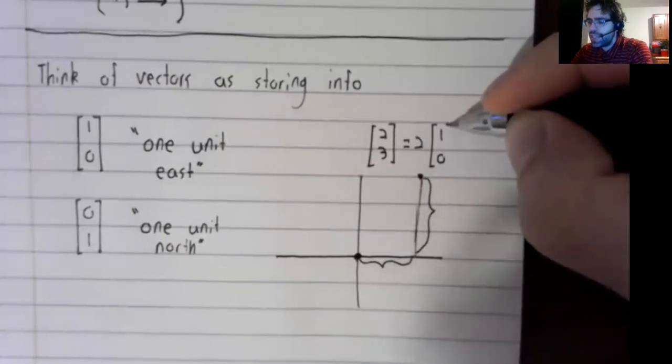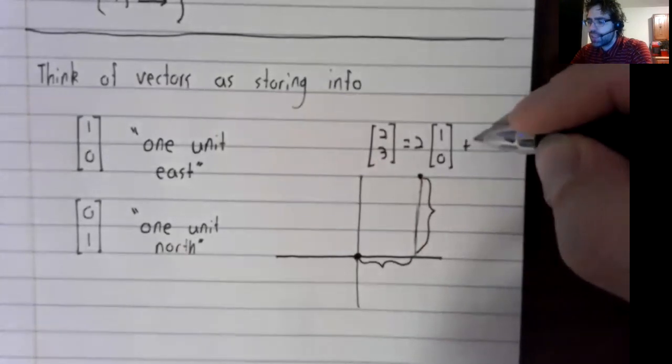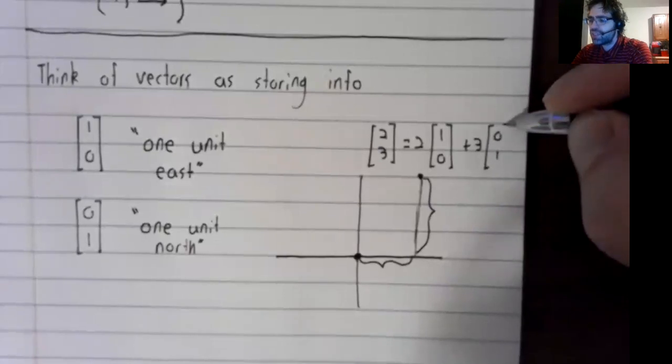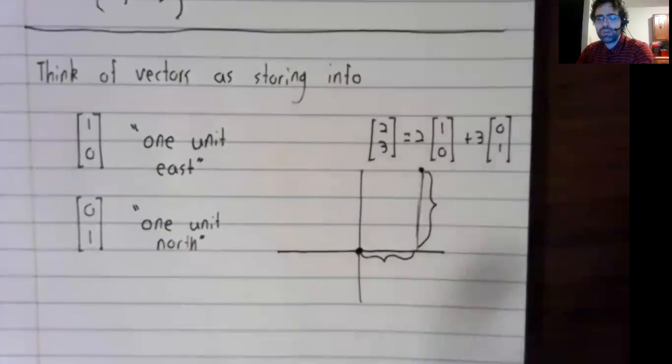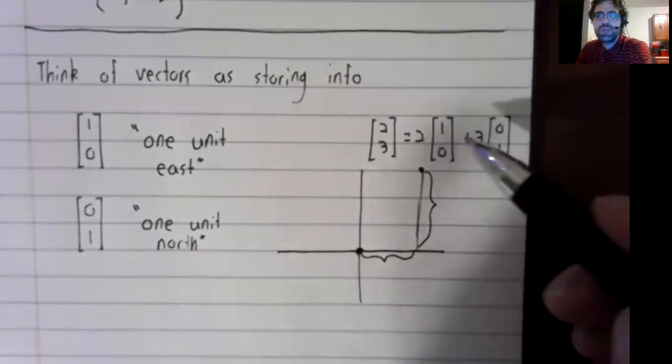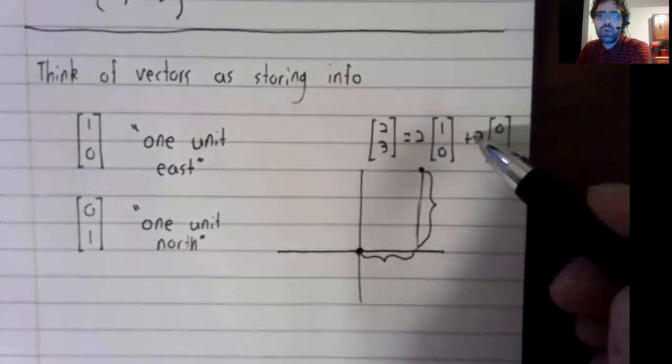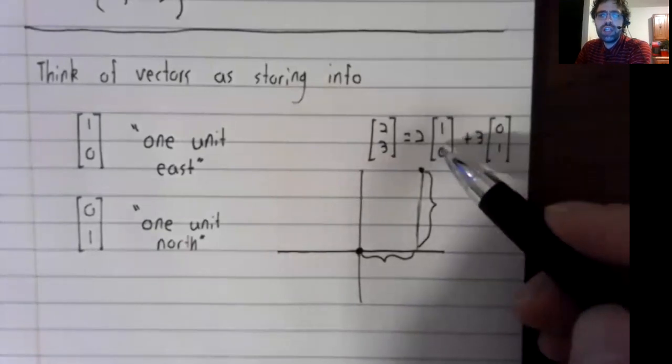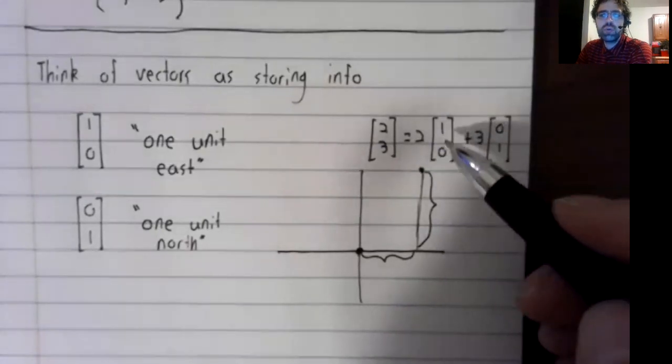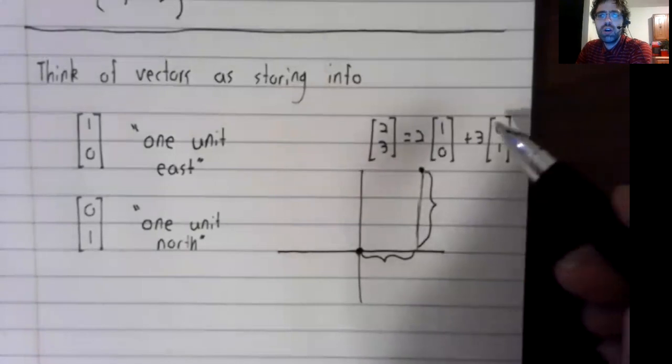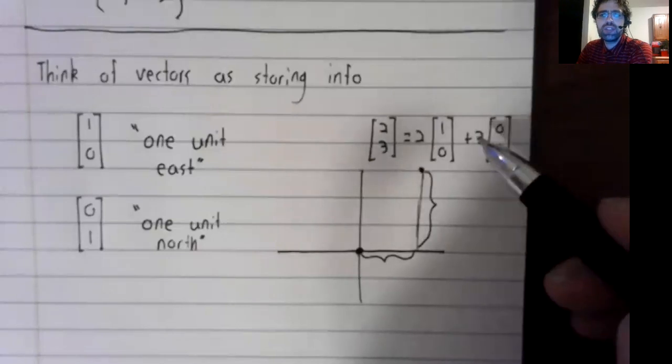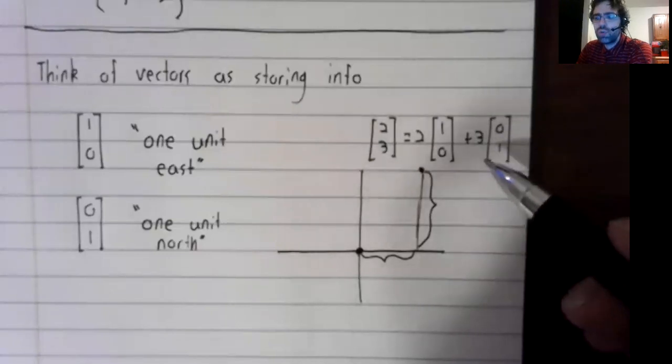And you write it in terms of these standard basis vectors. Two units east, three units north. All the information about east-west movement is stored here. All the information about north-south movement is being stored here.